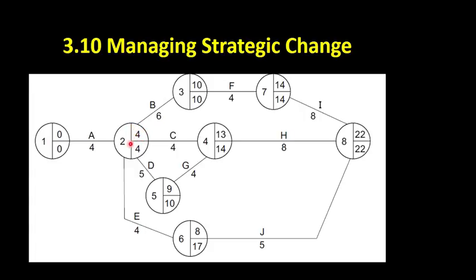So we've got quite a lot of slack time here. If we do 13 minus four — week 13 when we've got to start the activity, minus four when we could possibly start the activity — that gives us our float time. So we've got a potential float time of nine weeks here. There's nine weeks in which, any time between week four and week 13, we could choose to start activity E.